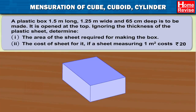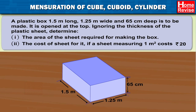A plastic box 1.5 meters long, 1.25 meters wide, and 65 centimeters deep is to be made. It is open at the top. Ignoring the thickness of the plastic sheet, determine: (1) the area of the sheet required for making the box, and (2) the cost of the sheet if a sheet measuring 1 meter square costs Rs. 20.